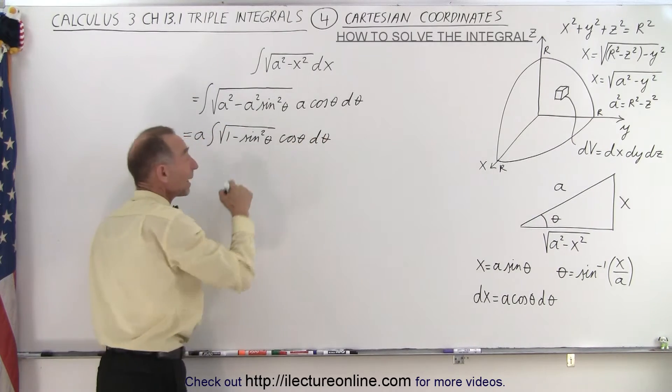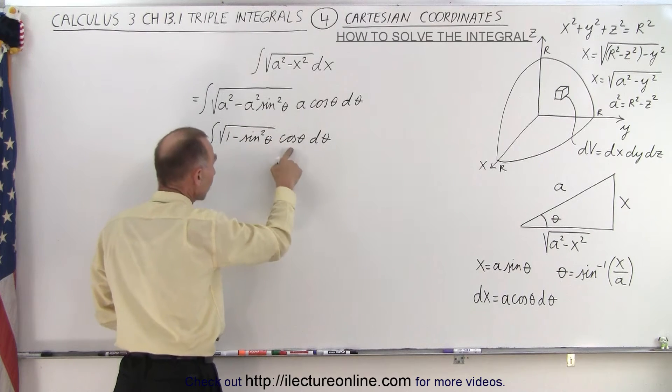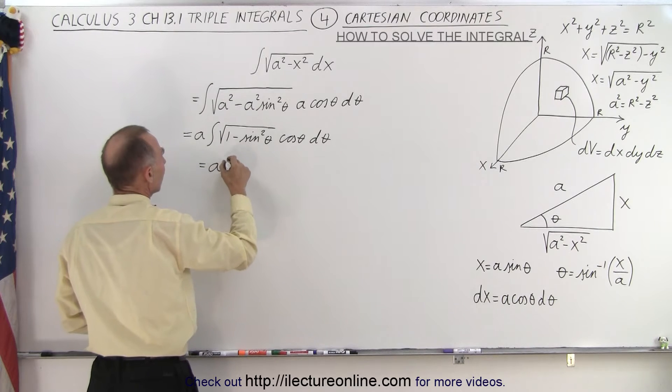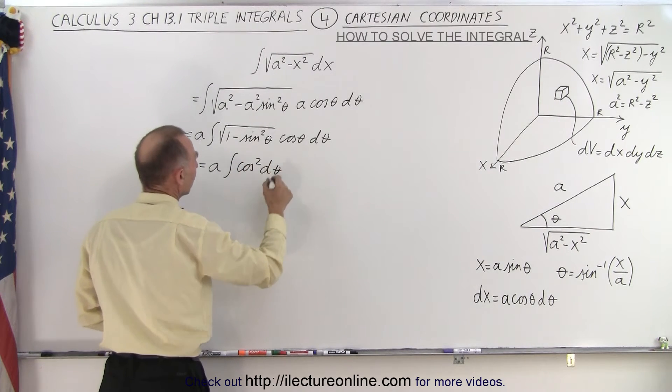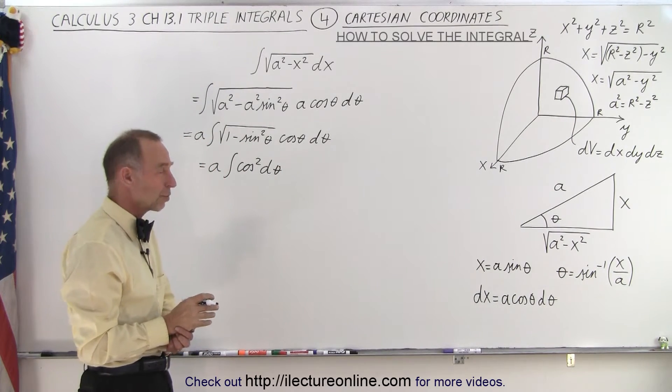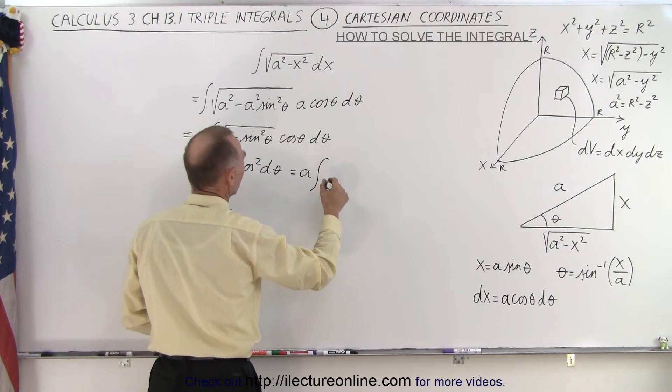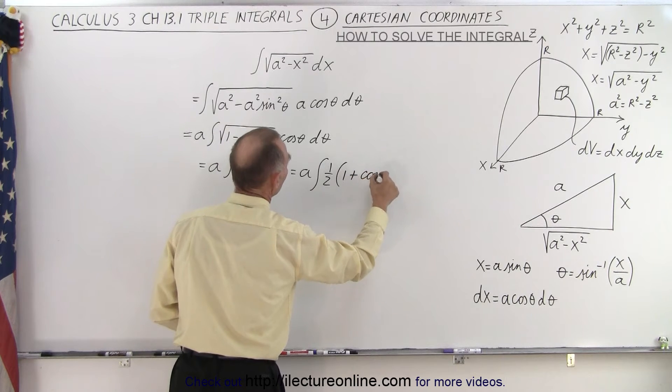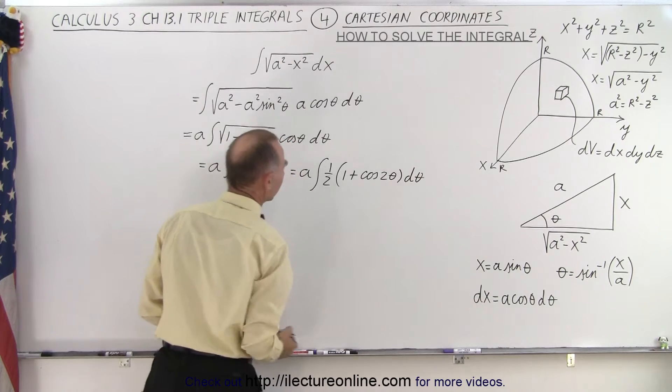And of course, 1 minus the sine squared, that's a cosine squared. But since it's under a radical, it gives us the cosine times the cosine gives us a cosine squared. So this is equal to a squared times the integral of the cosine squared d theta. And so now to integrate the cosine squared, we have to think of the right trick substitution. And so this would become a squared times the integral of 1 half times 1 plus the cosine of 2 theta, and then we still have the d theta right here.